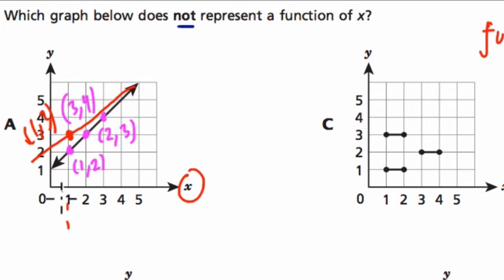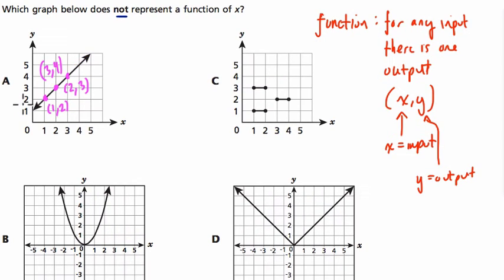So with that knowledge in mind, if we look at our different choices here, A is a function, but we're looking for something that's not a function. B is a function as well, because at no point does this graph tip back over on itself. This is called a parabola, right? It's like this nice U shape right here. Every input has exactly one output. The same is true for D.